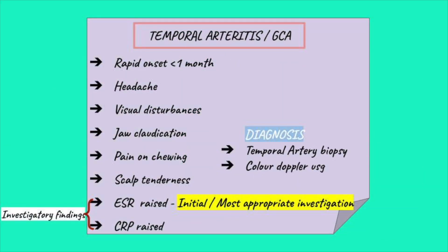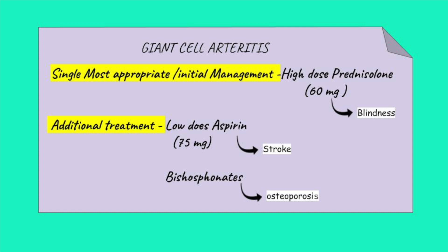Assessment should be made clinically for giant cell arteritis, keeping in mind typical symptoms of headache, visual disturbances, and jaw claudication. While ESR serves as the most appropriate initial investigation, the diagnosis is established with muscle biopsy. Keeping in mind the most feared complication of temporal arteritis — blindness — high-dose prednisolone is the single most appropriate initial management, preceded over low-dose aspirin given additionally to prevent the risk of stroke. Since long-term use of steroids that are eventually tapered off poses a threat of osteoporosis, bisphosphonates can be given.